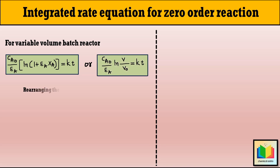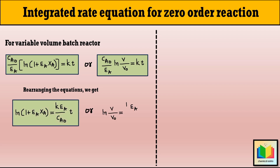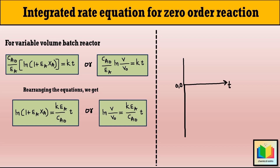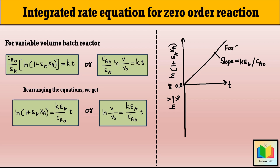To plot the graph, let's rearrange the equations. We can plot the graph of ln(1 plus epsilon_A X_A) or ln(V/V0) versus T. If we plot T on the X axis and ln(1 plus epsilon_A X_A) or ln(V/V0) on the Y axis, we get a straight line in the first quadrant when epsilon_A is greater than zero, with a slope of K epsilon_A divided by C_A0. Similarly, for epsilon_A less than zero, we get a straight line in the fourth quadrant with a slope of minus K epsilon_A divided by C_A0.